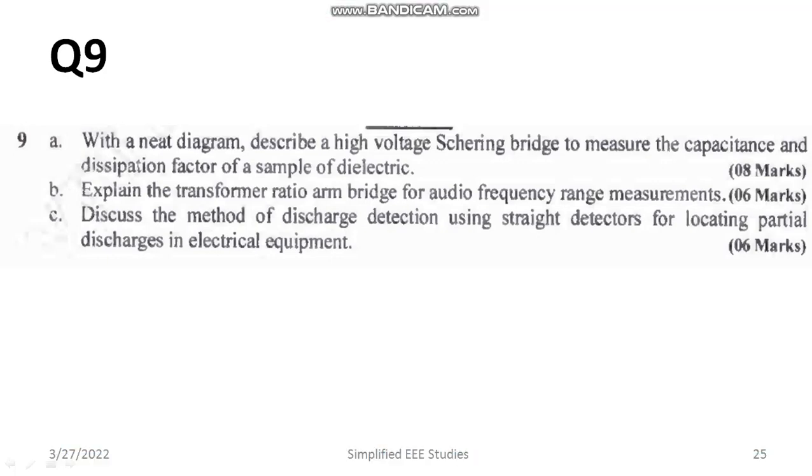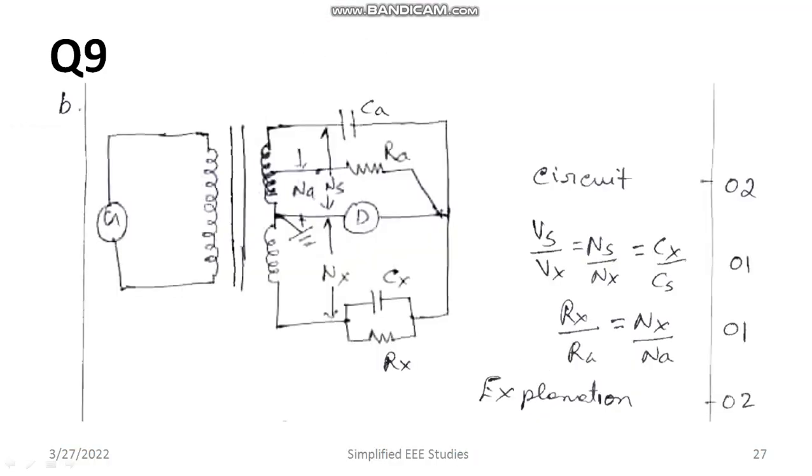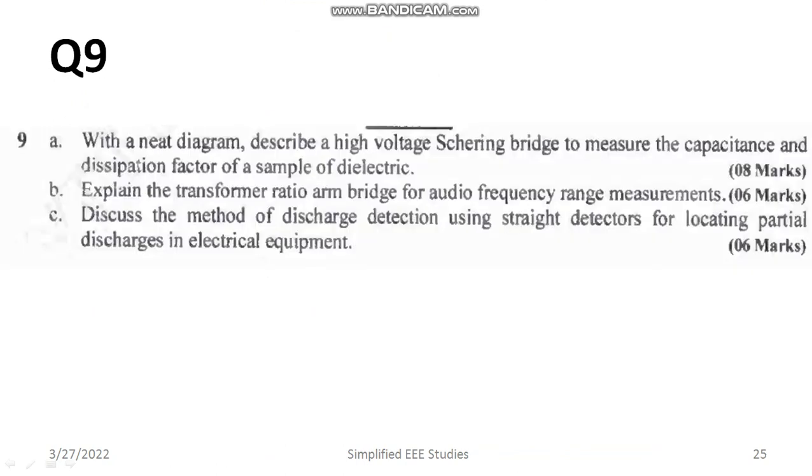Now explain the transformer ratio bridge. Same condition. Draw the diagram and make the balancing condition. Identify Rx and Cx. It is also having the weightage of six marks.